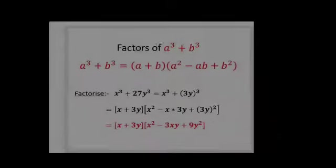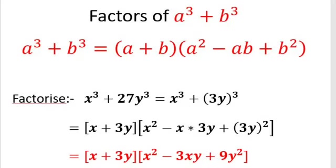Factors of a cube plus b cube. a³ + b³ = (a + b)(a² - ab + b²). So the factors of a³ + b³ is (a + b) in one bracket, and in the next bracket (a² - ab + b²). Now using this formula, let's solve some examples.